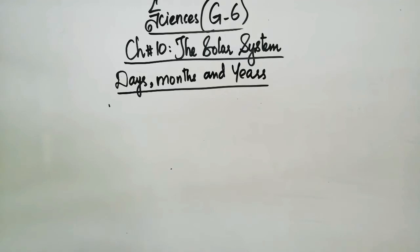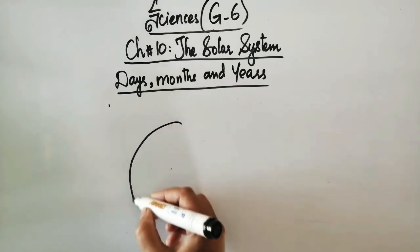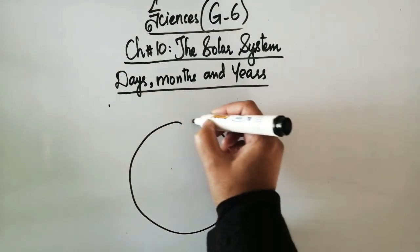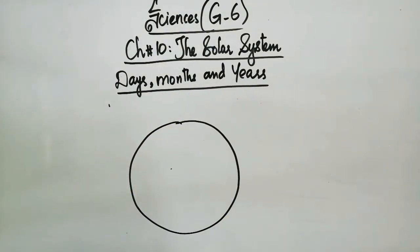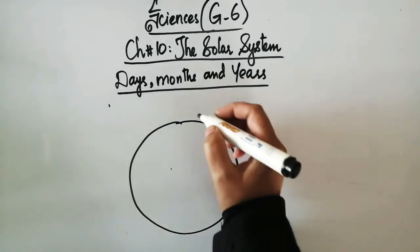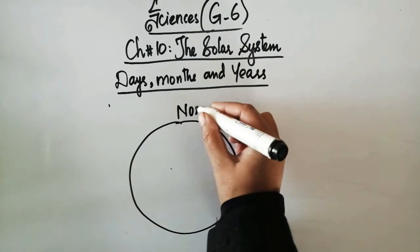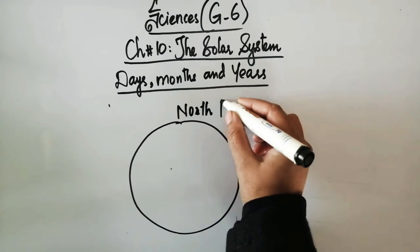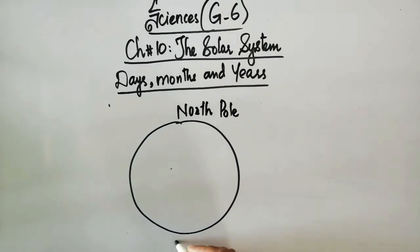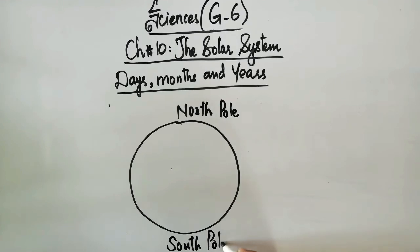So the earth spins on an axis through the north and south poles. So suppose this is your earth. And we know that there are two poles, north pole and south pole.